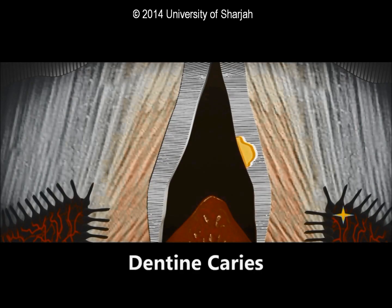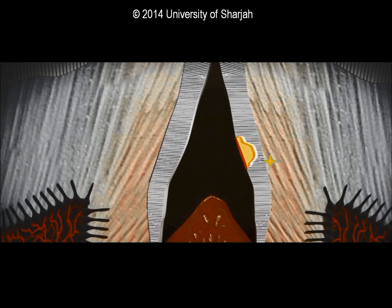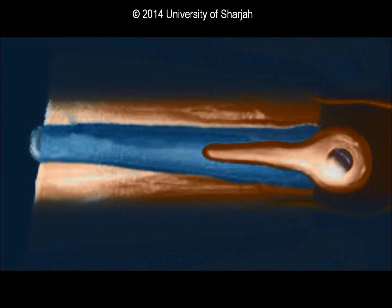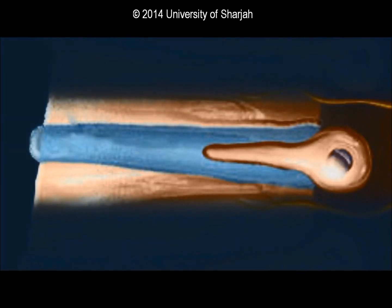Dentin caries differs from enamel caries in that dentin is a living tissue and can respond to caries attack. The defense reaction of the pulpodentinal complex may begin before the caries process even reaches the dentin, because of irritation of odontoblasts transmitted through the weakened enamel.